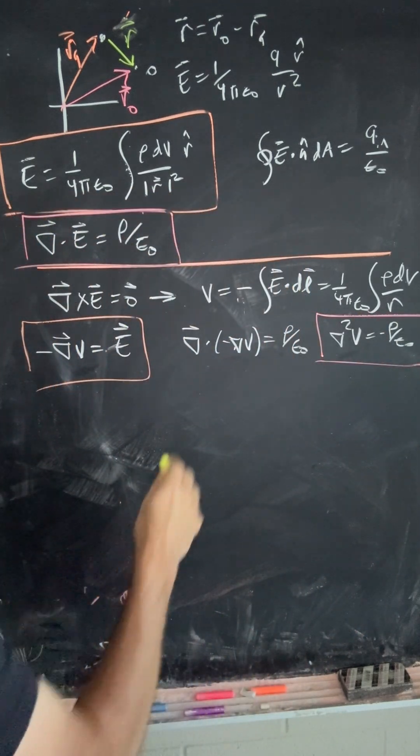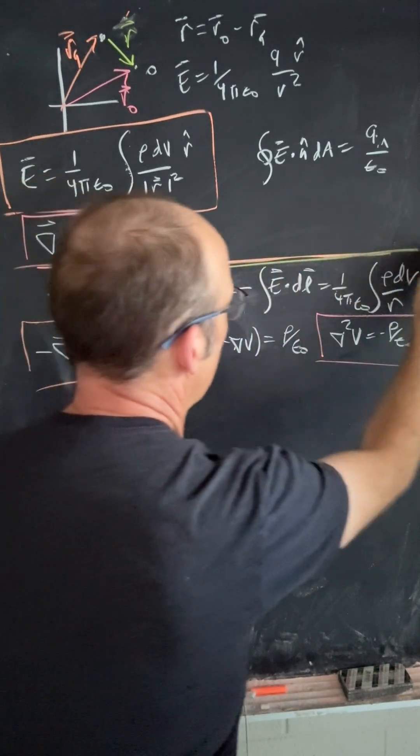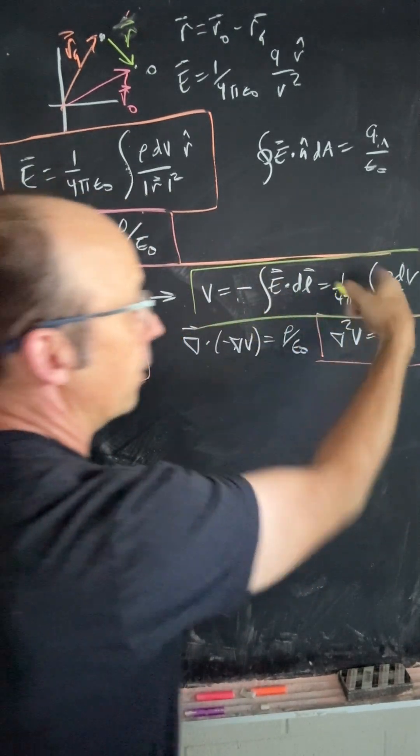And finally, how do I get the electric potential? Well, they're both right there. I can get the electric potential from the electric field or from the charge density.